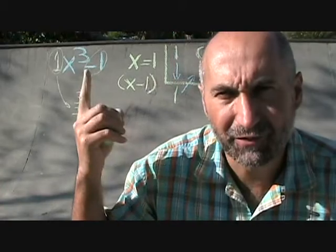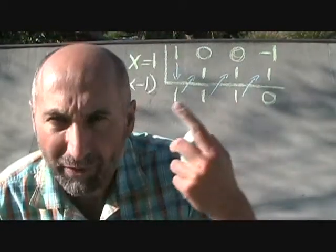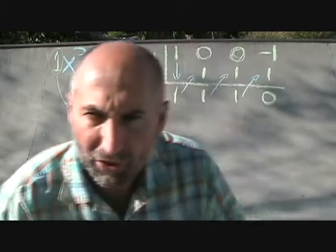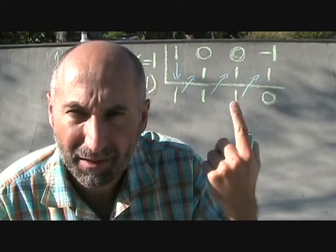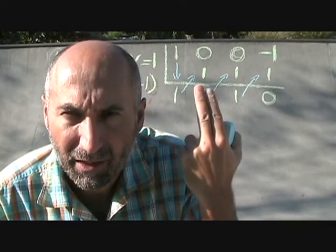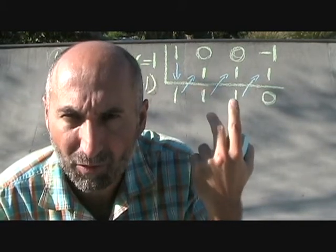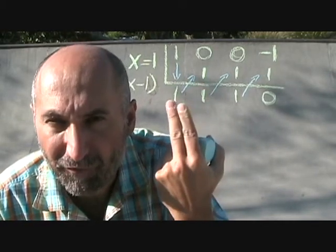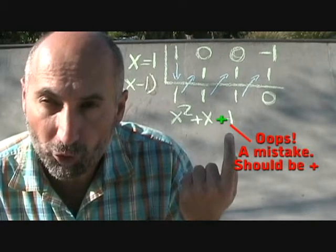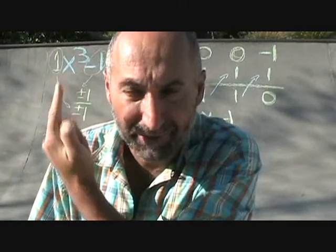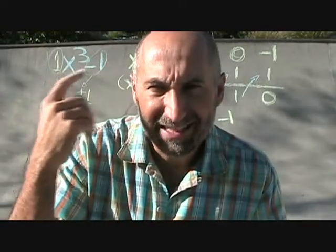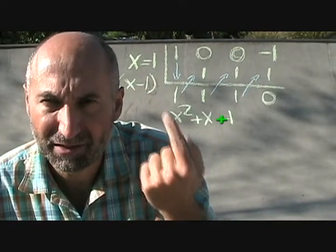Since the remainder is 0, we know x minus 1 is a factor. The quotient we get is 1x squared plus 1x plus 1. If any of those middle terms were 0, it would just be a place marker for the missing term. The question asked us to factor this, so what we have now is x cubed minus 1 factored as x minus 1 times x squared plus x plus 1.